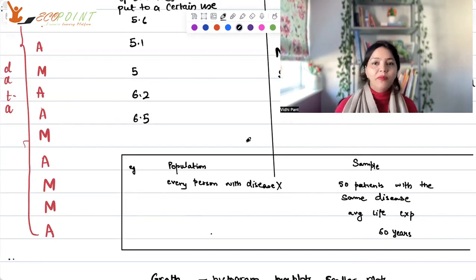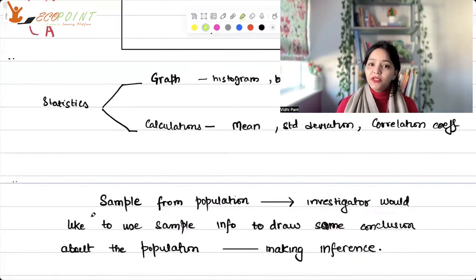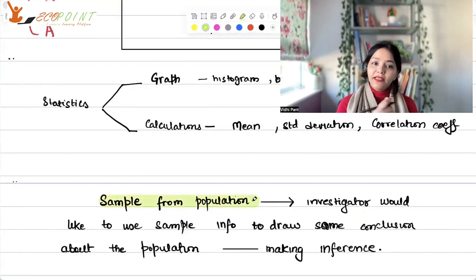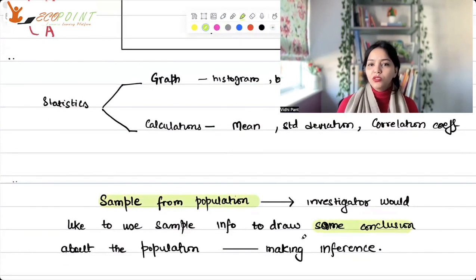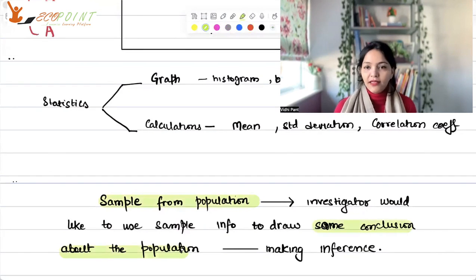This process is done so that you're able to get some results out of the sample with which you are able to make some inferences about the population. Suppose when you have this particular disease x, the life expectancy is different from a normal person. It's easy for the researcher to find the average life expectancy of these 50 people. You can make some inferences using the data that you have for the sample about the population average life expectancy as well.